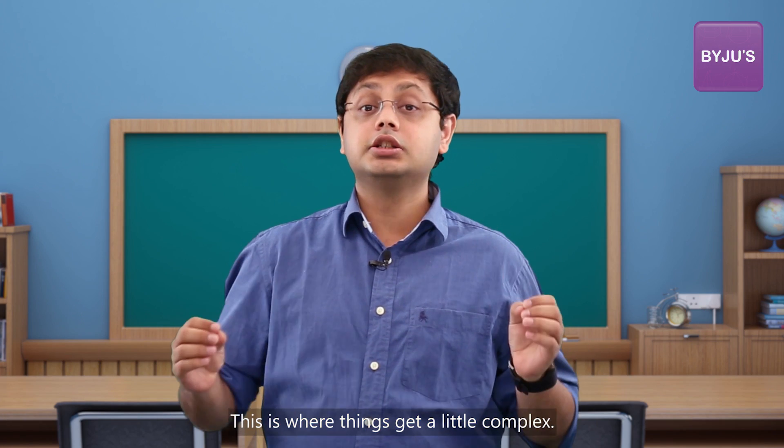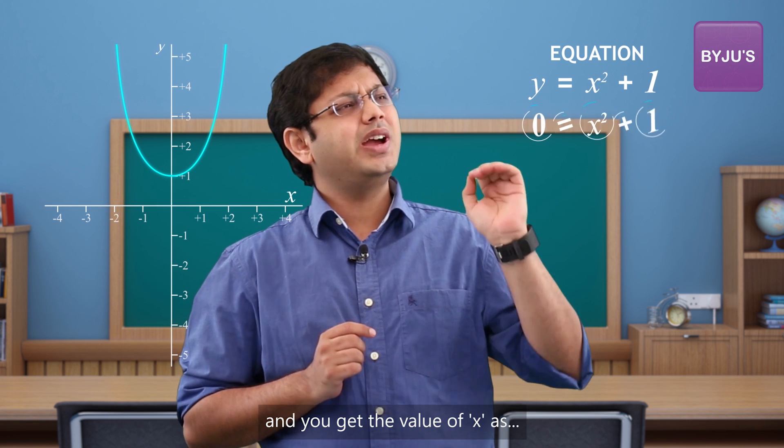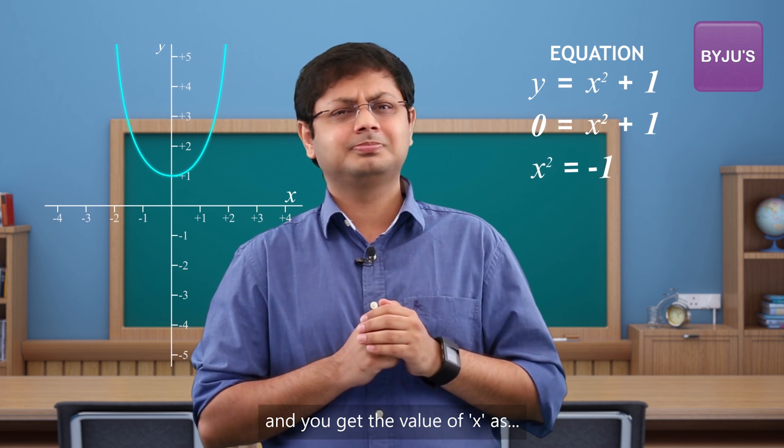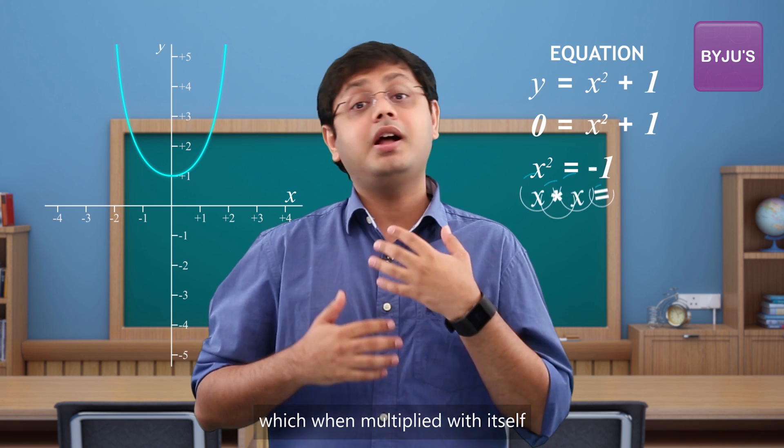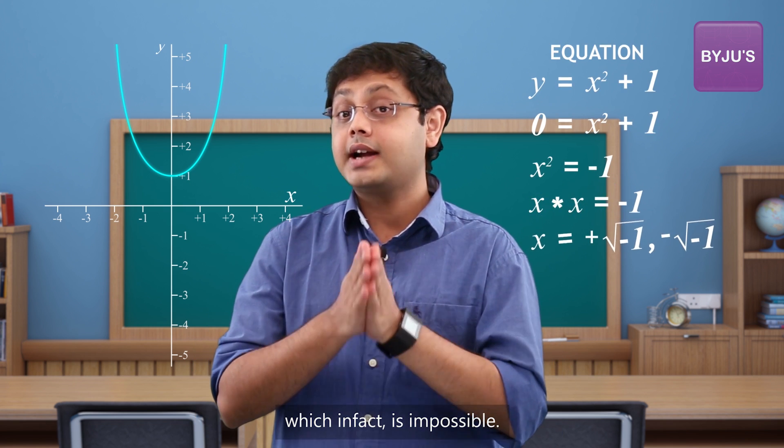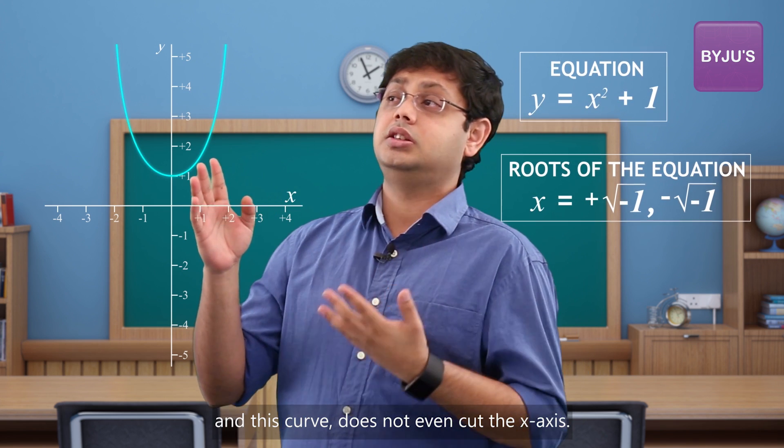This is where things get a little complex. Let's solve this equation and you get the value of x as... hmm. To solve this, we will have to find a number which when multiplied with itself will give you minus one, which in fact is impossible. And this curve does not even cut the x-axis.